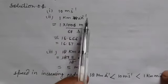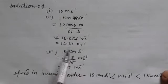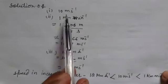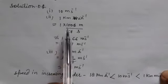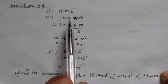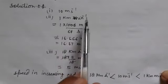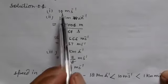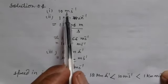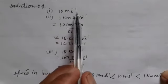We will change all speeds to meter per second and then arrange them in increasing order. The first speed is 10 meters per second.